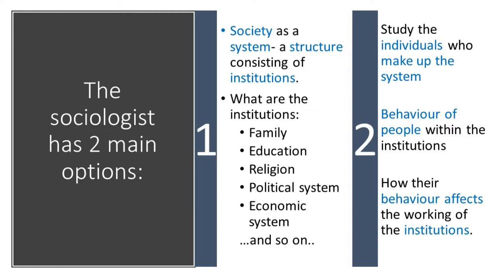The sociologist has two main options: either to study society as a whole and look at the institutions within the society, or to look at the individuals who make up those institutions. So we have society as a system — a structure consisting of institutions such as family, education, religion, the political system, and the economic system. All these are the institutions that make up society.